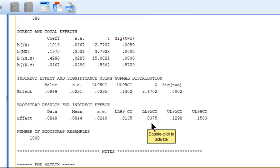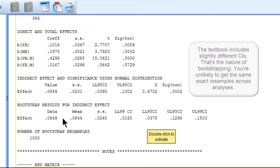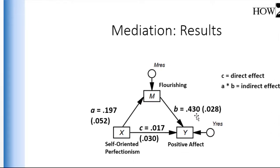The 95% confidence intervals do not intersect zero: lower bound = 0.0375, upper bound = 0.1298. Because both bounds are positive, I declare the point estimate statistically significant. Since the indirect effect of 0.0849 is significant and the direct effect between the independent and dependent variable is not significant, this is a case of full mediation. Those are the steps for conducting a mediation analysis with one mediator.